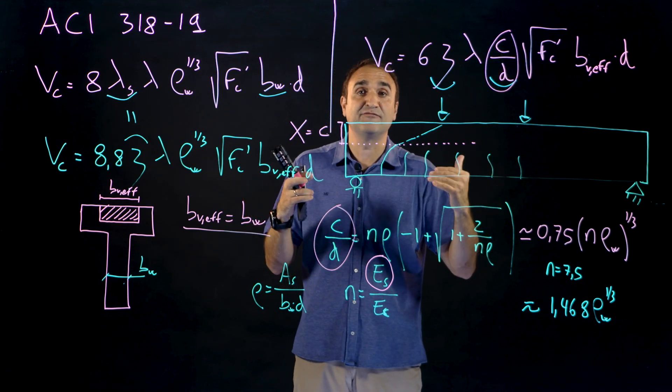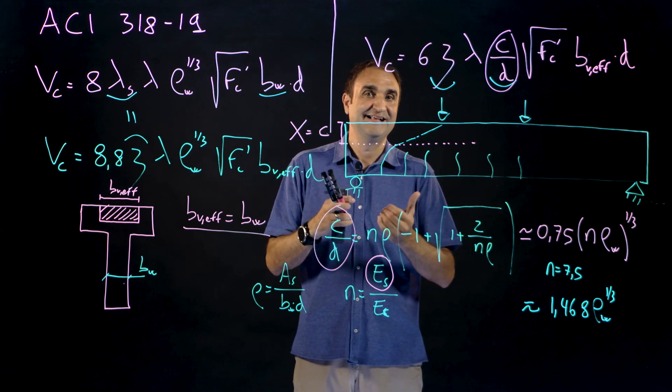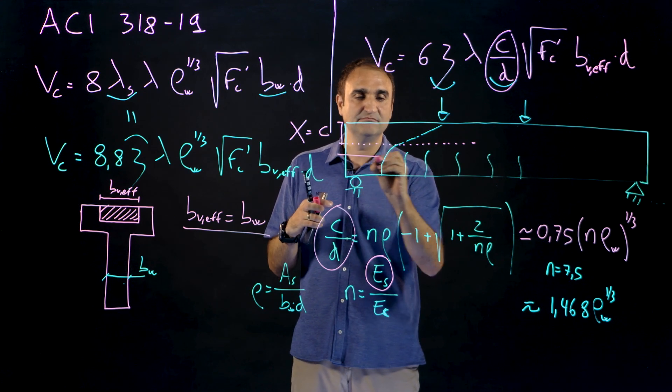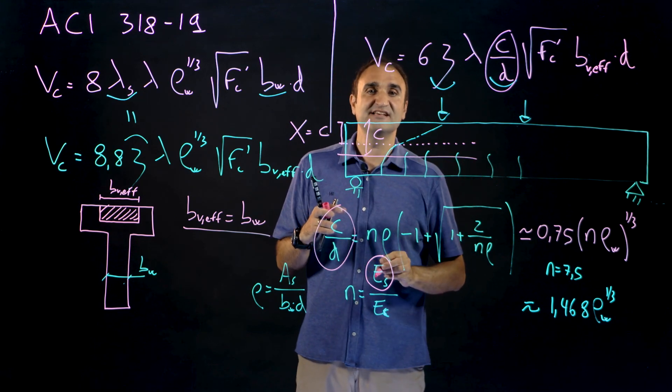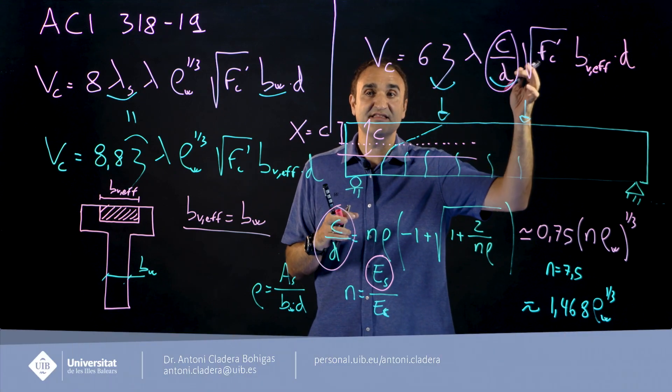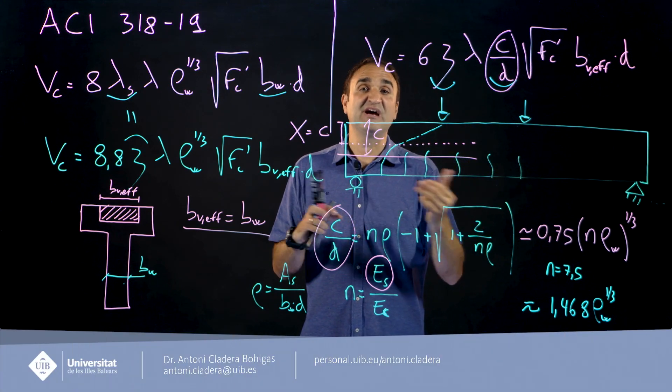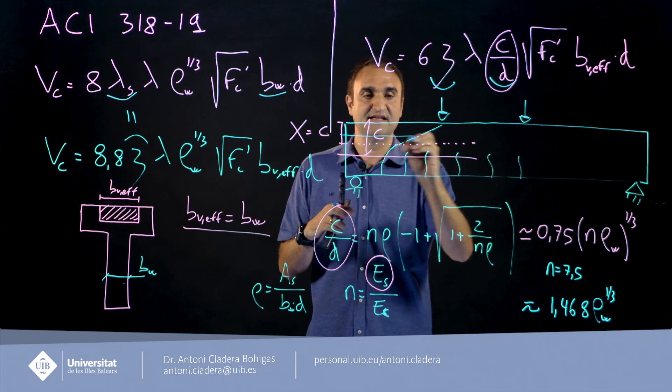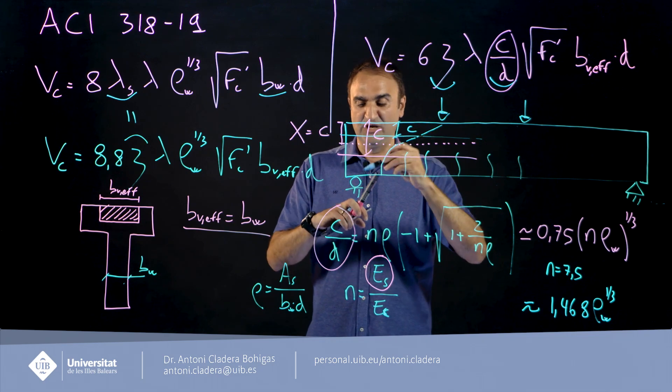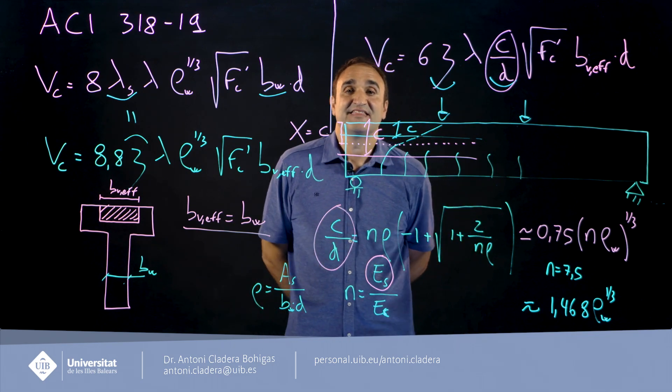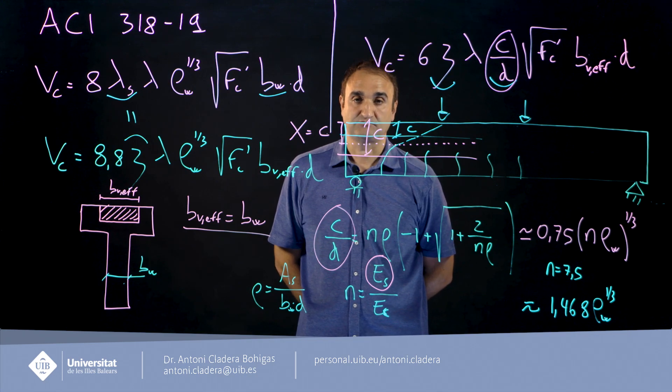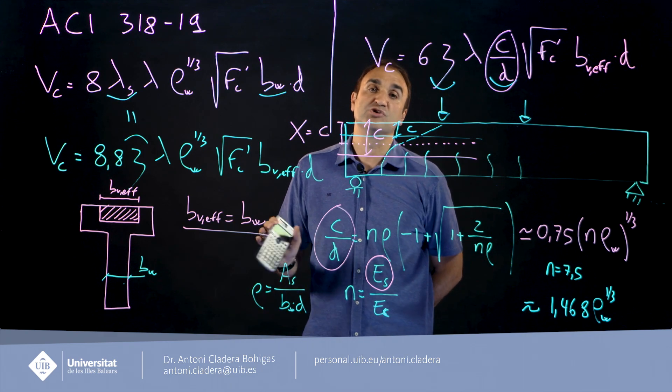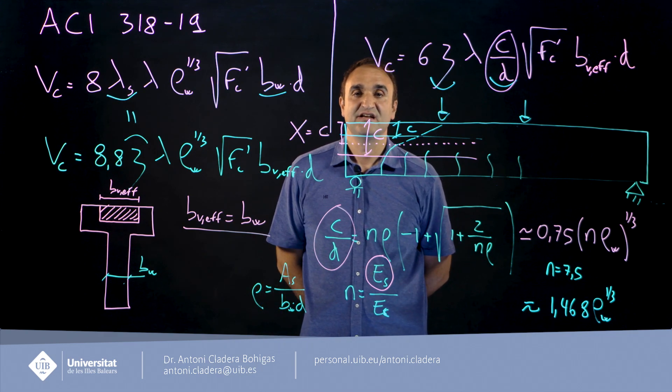Other possibility is that this parameter c over d that we have here can change when we have axial forces or prestress forces or tensile loads. If you have prestressing then c increases and you have more strength, more shear strength. And if you have axial tensile loads then c will decrease and you will have a lower shear strength. Thank you very much for your attention and I invite you to see other videos in this YouTube channel but most of them are in Spanish. Thank you very much.